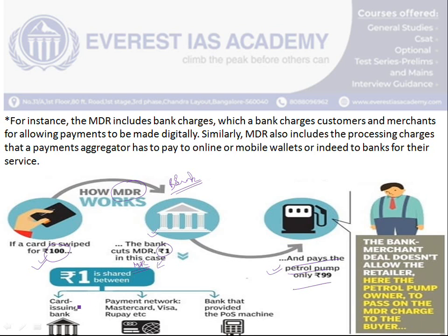That 1 rupee is shared between three parties: the card-issuing bank, the payment network such as Mastercard, Visa, or RuPay, and the bank that provided the POS or swiping machine to the merchant. So it is shared between these three entities. That is how the Merchant Discount Rate works.